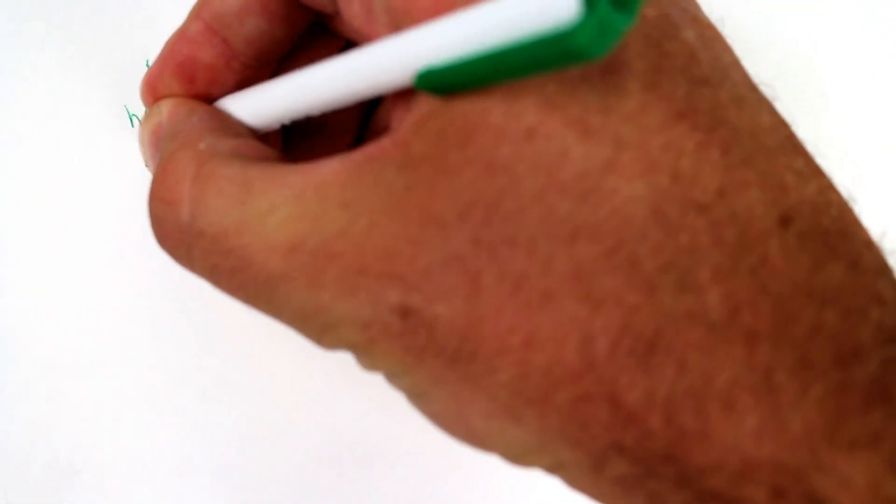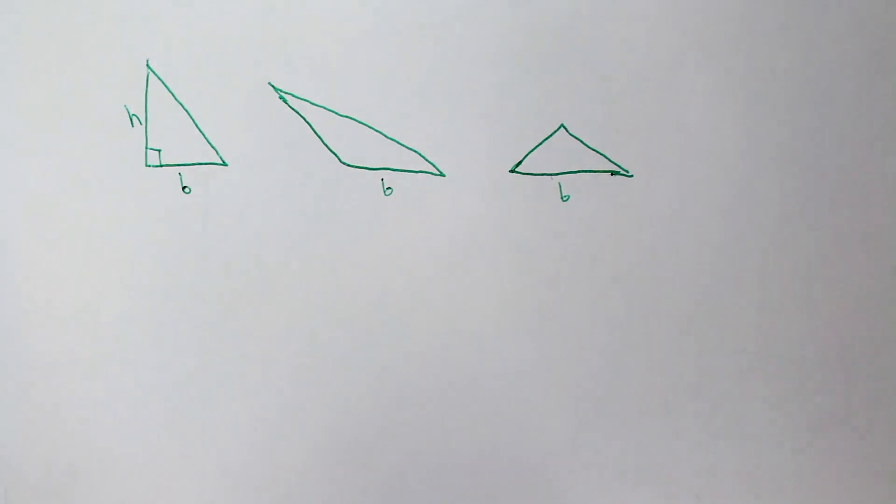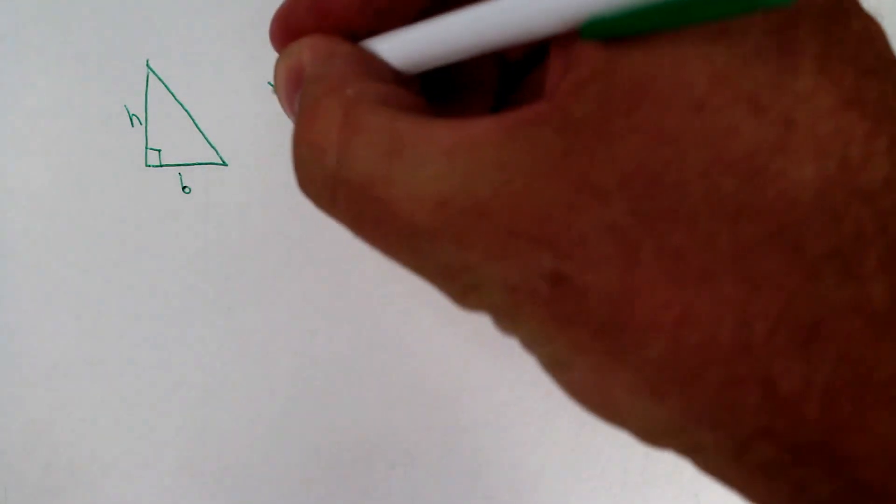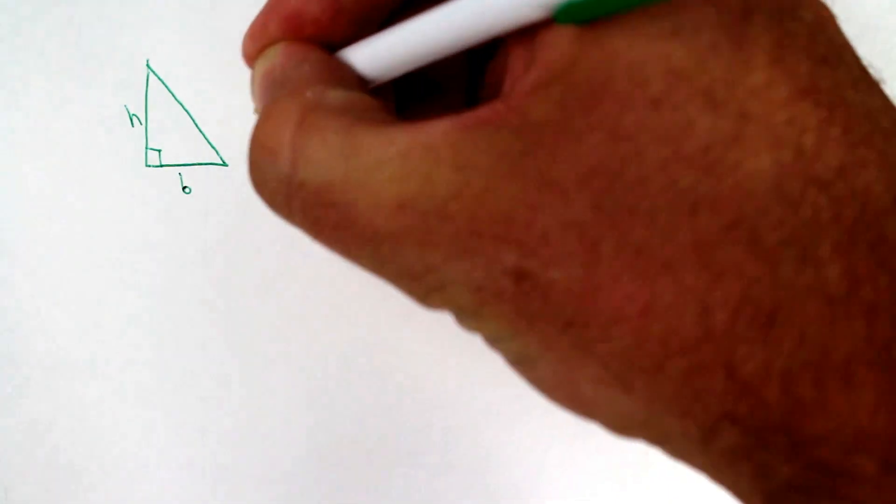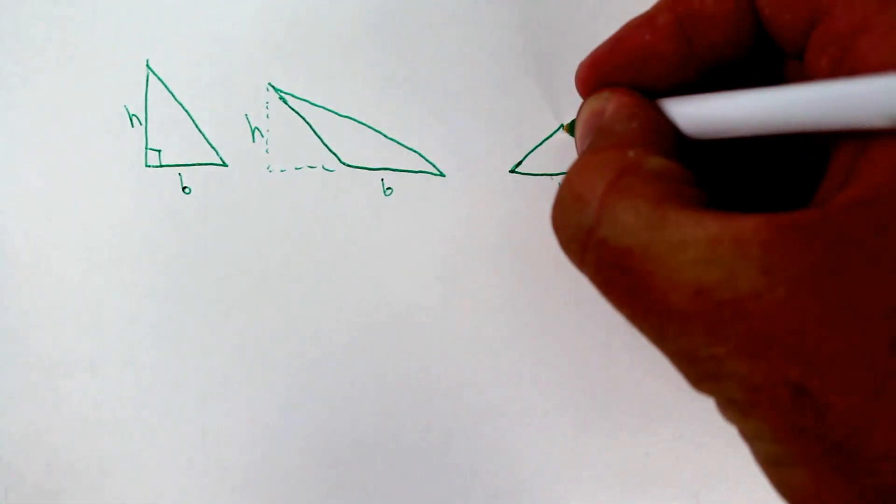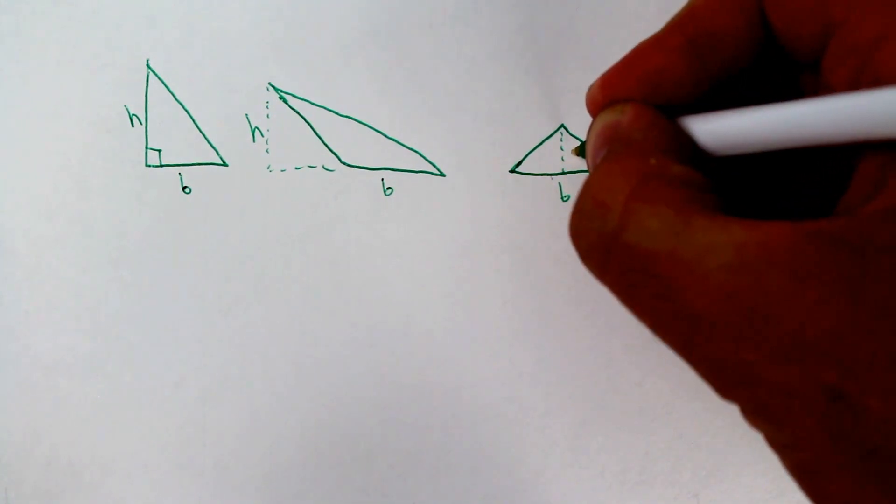So on this triangle, it's just this vertical side. These other two triangles, you're going to have to draw an imaginary line from the base to the highest point. And then that will be your height. And here's your height for this triangle.